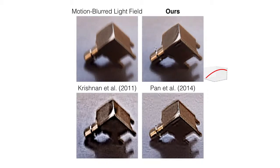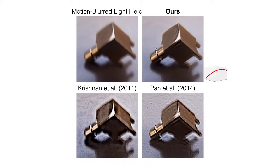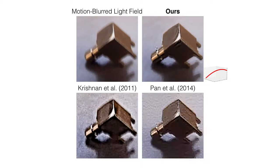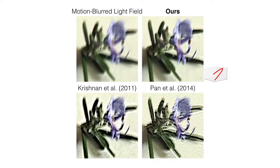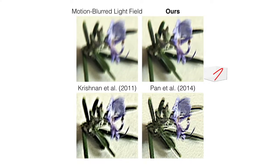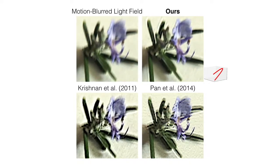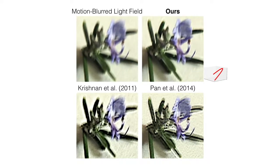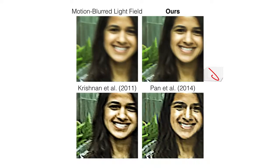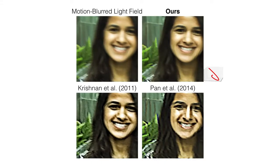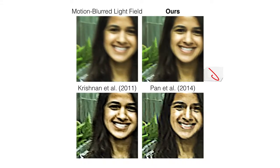Finally, we demonstrate the performance of our algorithm on real handheld motion-blurred light fields. We use the Lytro Illume camera with exposures of 1/20th of a second. Our algorithm is able to correct the spatially and angularly varying blur found in real motion-blurred light fields and estimate the camera motion path during the exposure.